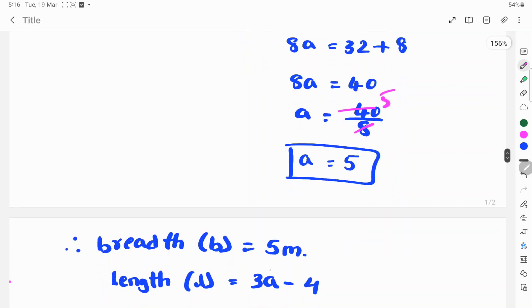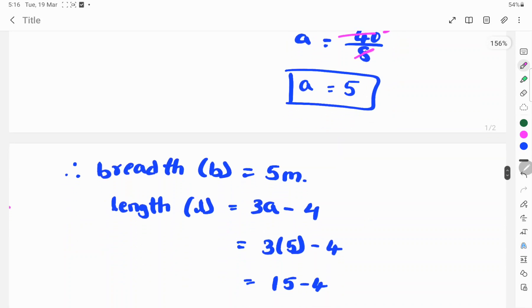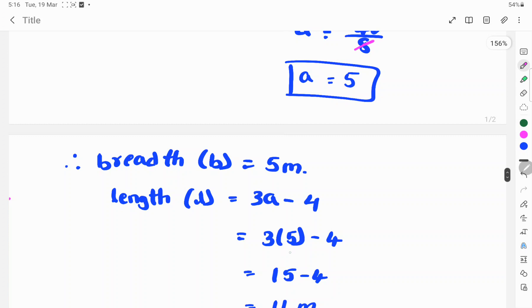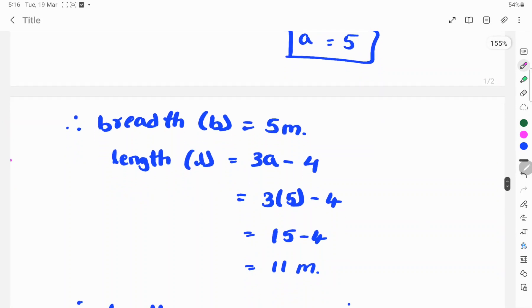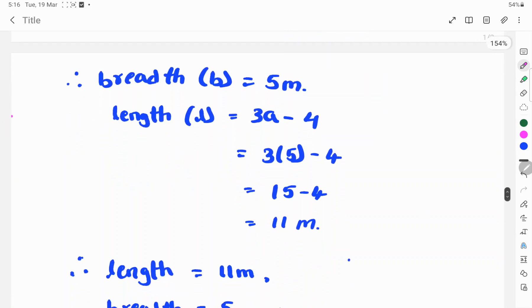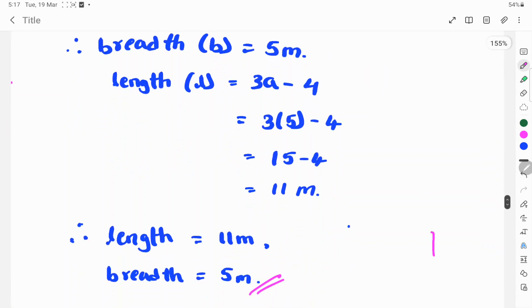Breadth B equals 5 meters. And length L equals 3A minus 4. 3 into 5 minus 4. 3 fives are 15 minus 4. 15 minus 4 is 11. So length is 11 meters, breadth is 5 meters.